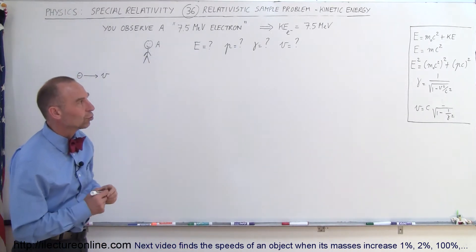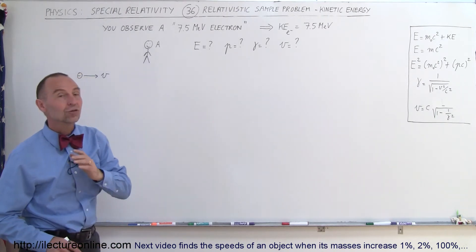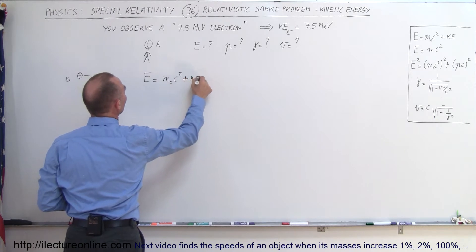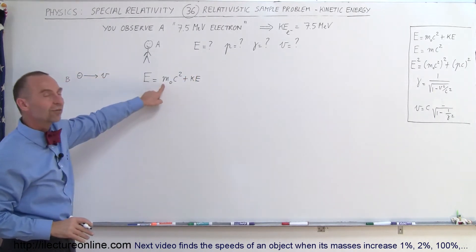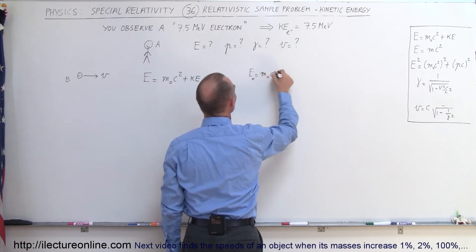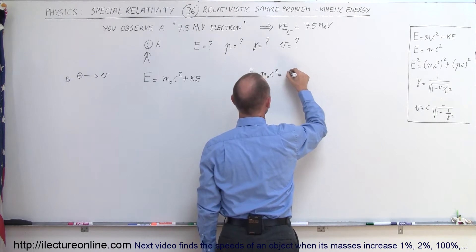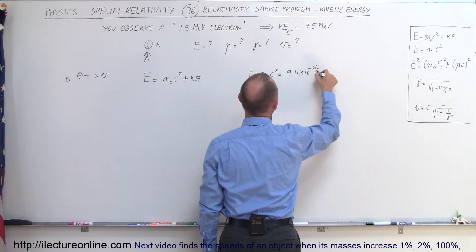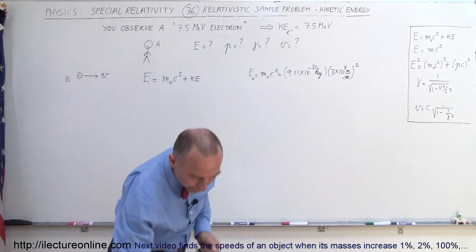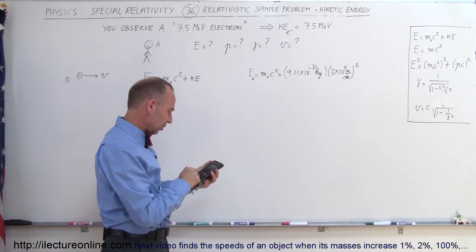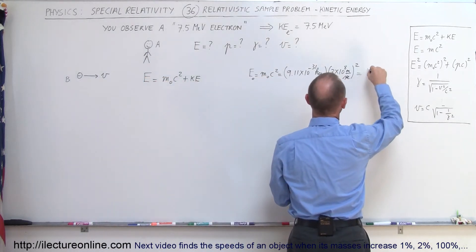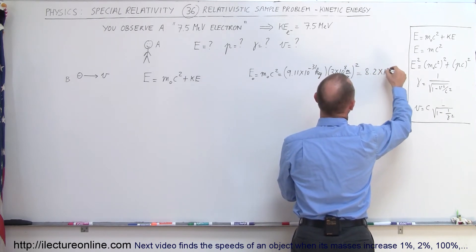We have some equations on the right of the board that we can choose from. To find the total energy, we use the top equation: total energy equals rest mass energy plus kinetic energy. The kinetic energy is known — 7.5 MeVs. The rest mass energy, E = m₀c², uses the electron mass of 9.11 × 10⁻³¹ kg multiplied by the speed of light squared, 3 × 10⁸ m/s, squared.